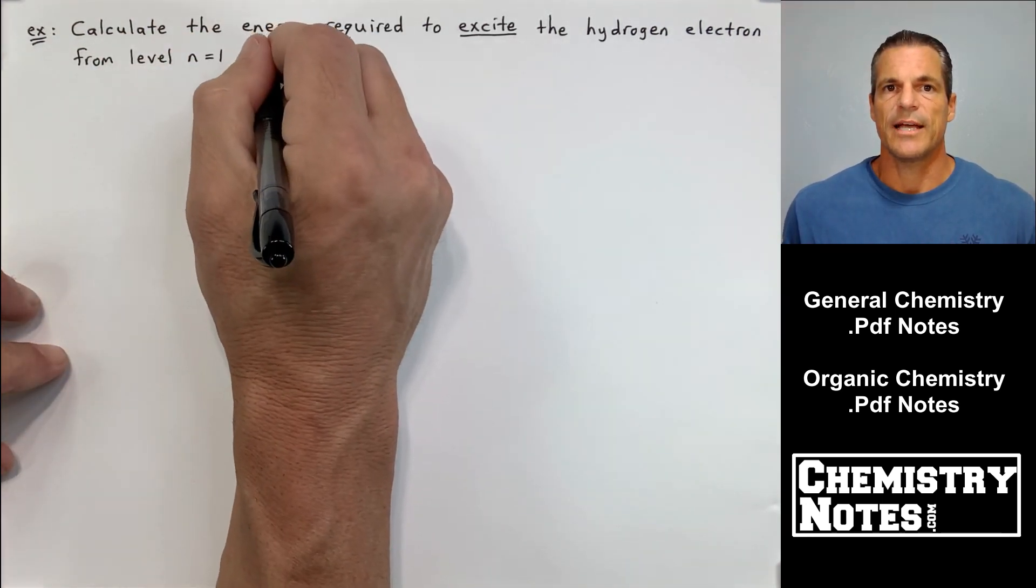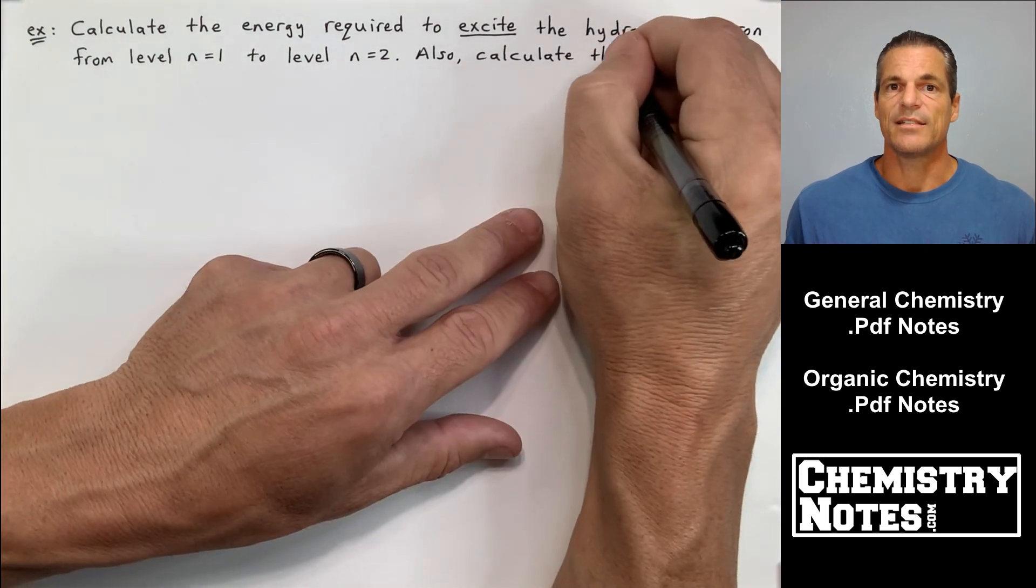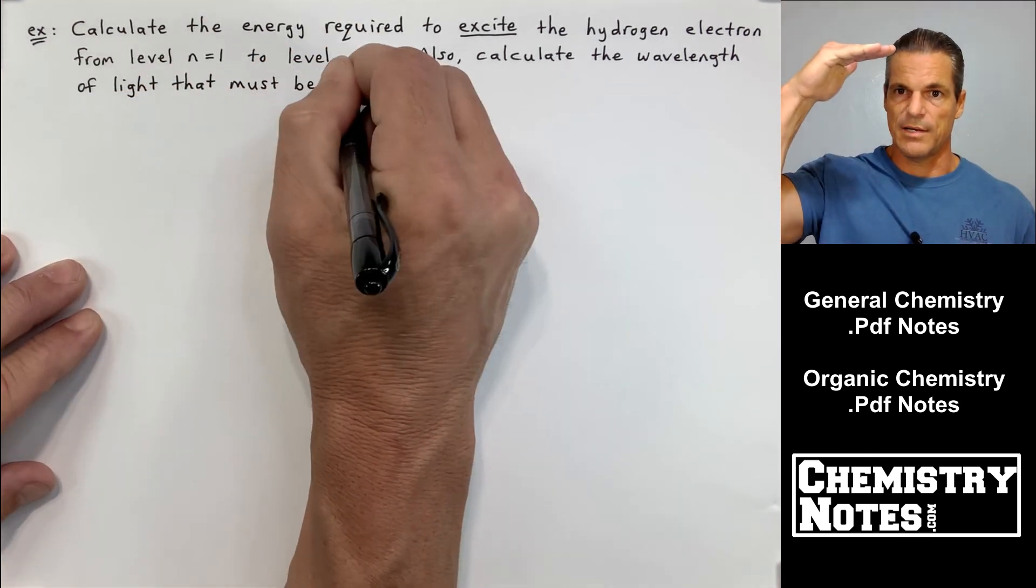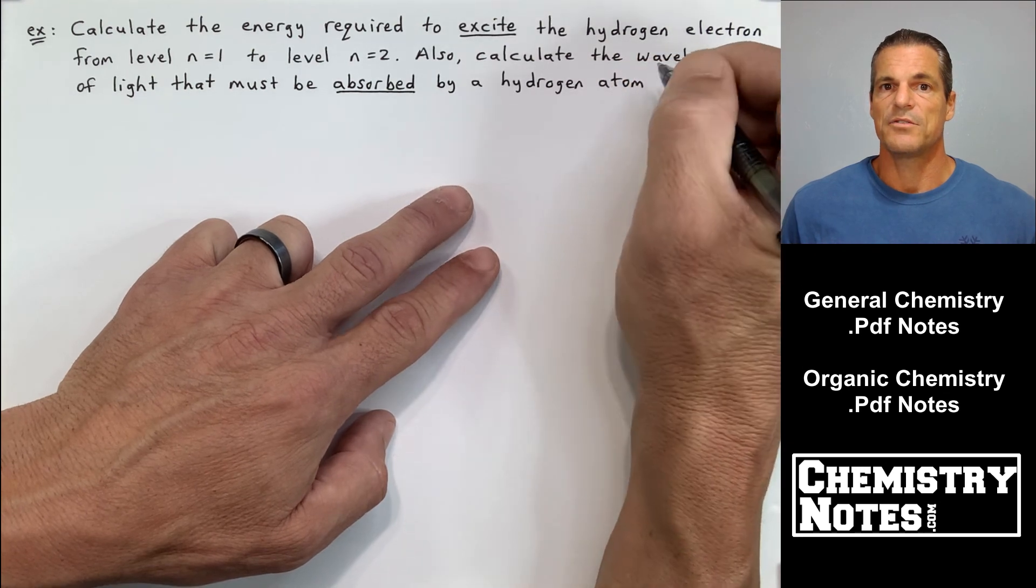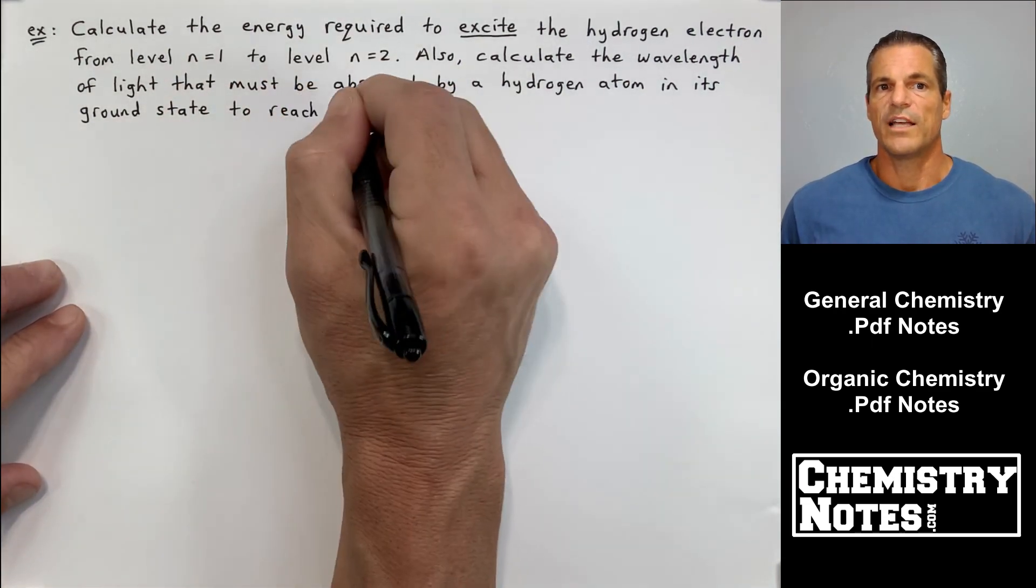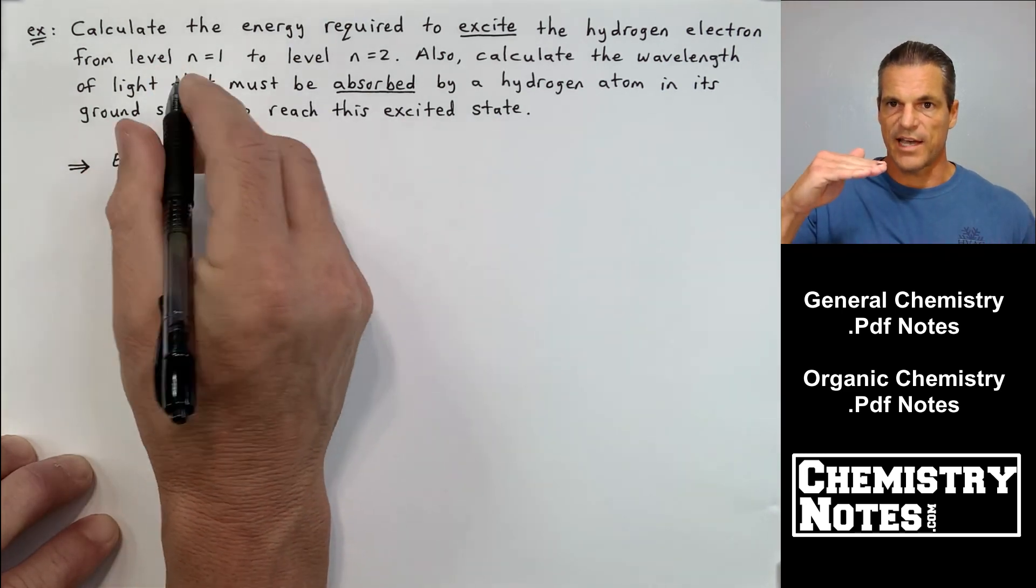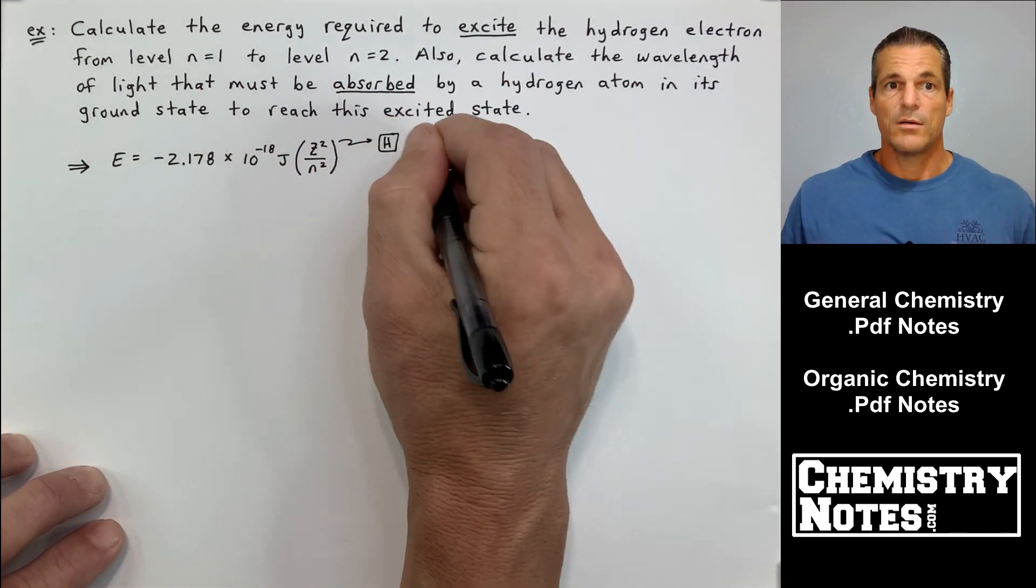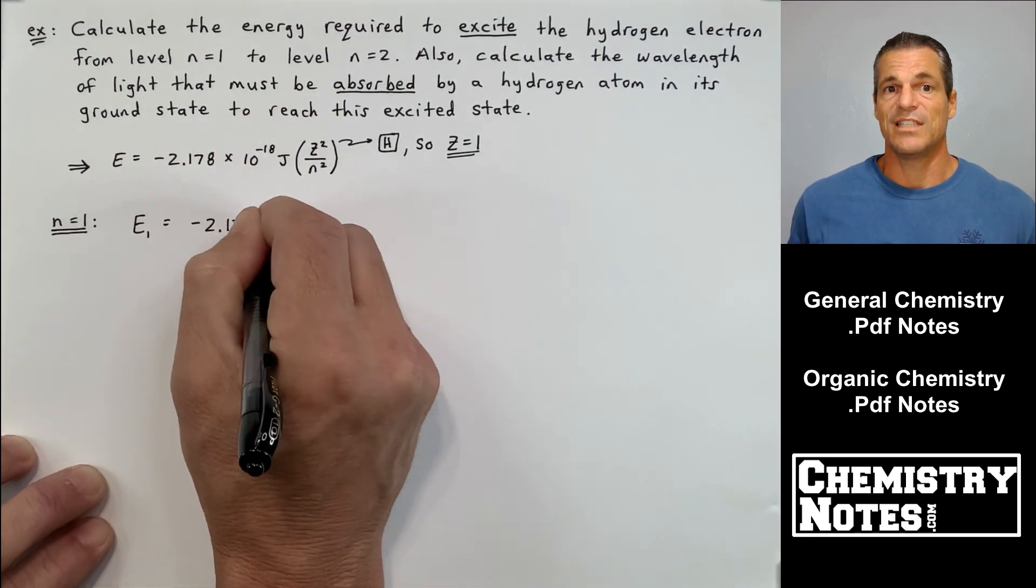Here's an example. Best way to practice is to use examples. Calculate the energy required to excite the hydrogen electron from level N equals 1, that's the ground state, to level N equals 2. Also calculate the wavelength of light that must be absorbed by a hydrogen atom in its ground state to reach this excited state. If we're going to excite an electron from N equals 1 to N equals 2, we're going to have to absorb energy. So they want us to calculate the energy. We can use the Rydberg equation.